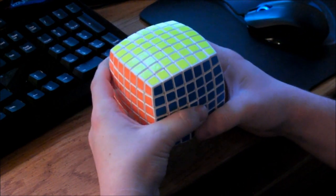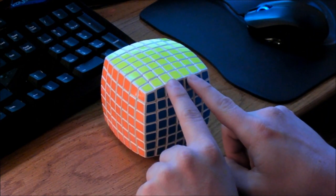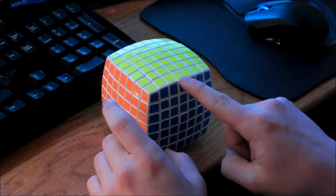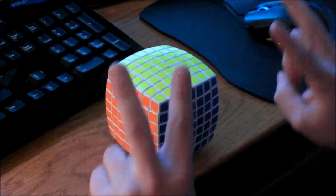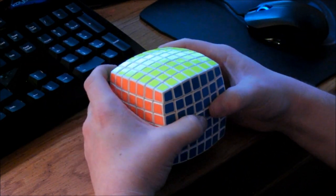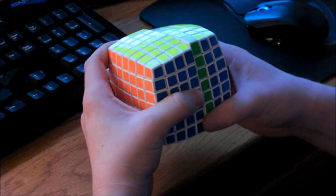And if you get to the situation where you only want to switch these two inner pieces, not these ones and not this one, you can do the pure form of the second OLL parity, where you just do it with that layer.